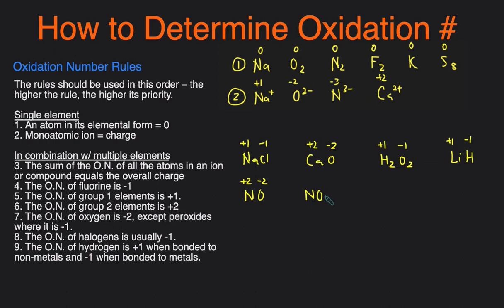Let's look at NO₃⁻, which has an overall charge of −1. We know each oxygen individually is −2. We need to solve for nitrogen. We set up an algebraic expression: X (nitrogen) plus three oxygens, each at −2, must equal the overall charge of −1. So X − 6 = −1, which means X must be +5. The three oxygens contribute −6 overall, so nitrogen must be +5 to give a net charge of −1.